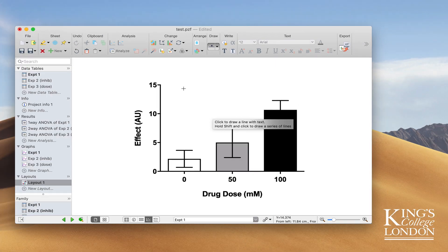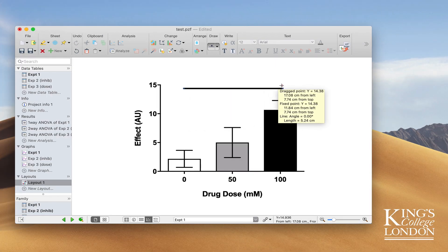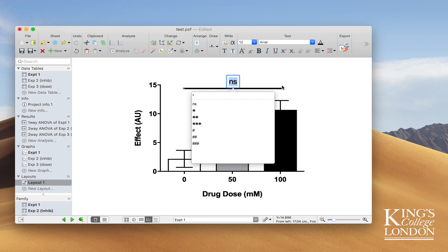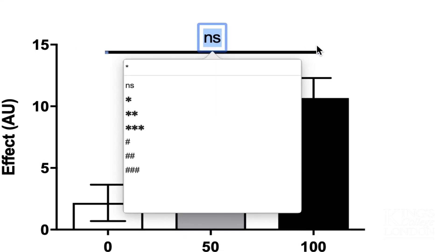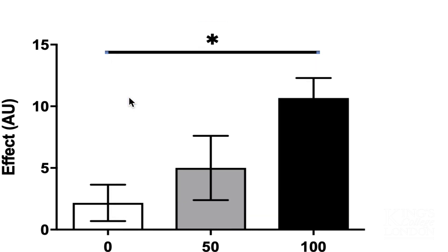By clicking at any starting point, holding the shift key and dragging horizontally, I can drop this line on my graph, and automatically Prism will ask me what text I wish to put in the box. It knows that I'm trying to show a difference between groups and gives me the choice of NS for non-significant, a series of stars, or hash signs. I'm just going to choose a single star in this instance.